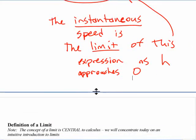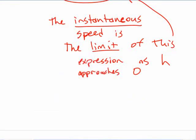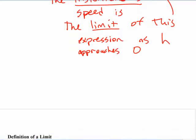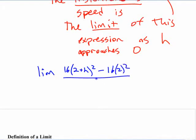But as h approaches 0, if you wanted to do it with symbols, you'd have to say something like the limit of 16 times 2 plus h squared minus 16 times 2 squared over h, the limit of that as h approaches 0 is equal to, what did we say that's equal to? 64.